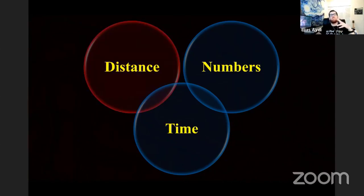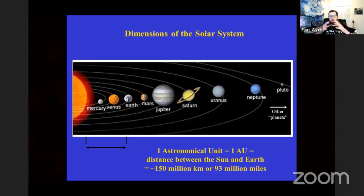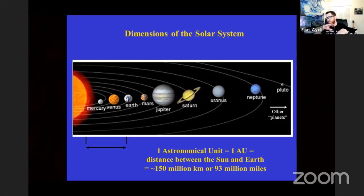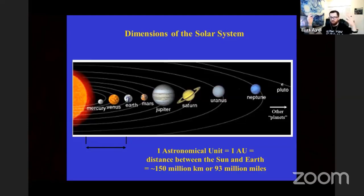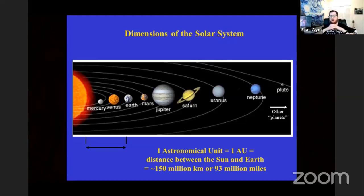Starting with distance: if we want to talk about the distances in our solar system, this is an artistic impression of our solar system. Of course, neither sizes nor distances are to scale. For example, the distance between the Earth and our sun is around 150 million kilometers. This is just a very short distance in the universe. Because of how large this number is, astronomers like to call it one astronomical unit just to save time and effort.